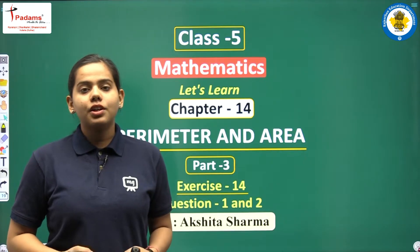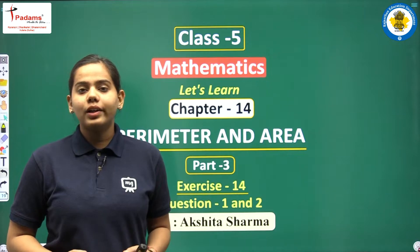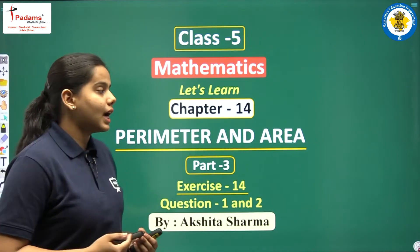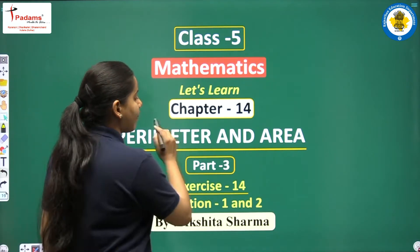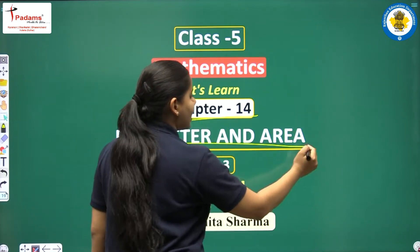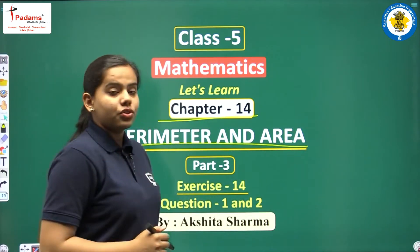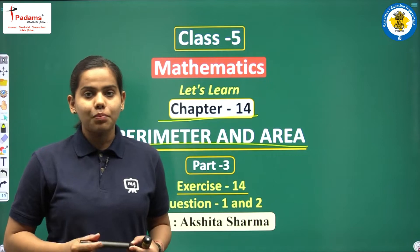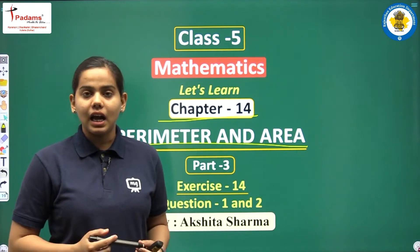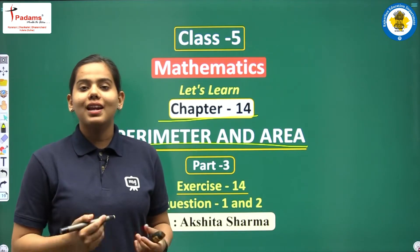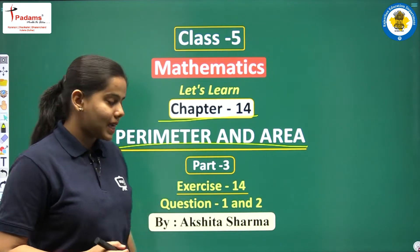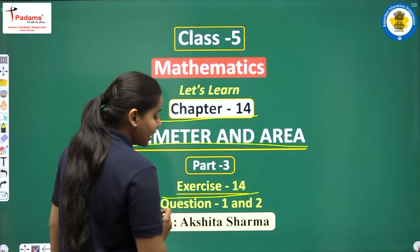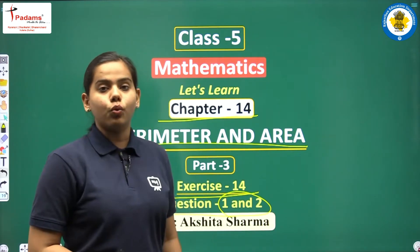Hello everyone, I Akshuta Sharma welcome you all back to the Maths class. Children, we are studying chapter number 14: Perimeter and Area. In our previous class we have understood the concepts related to perimeter and area, so we can start doing the exercise. Today we will complete exercise number 14, question number 1 and 2.